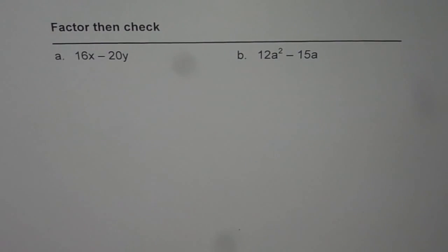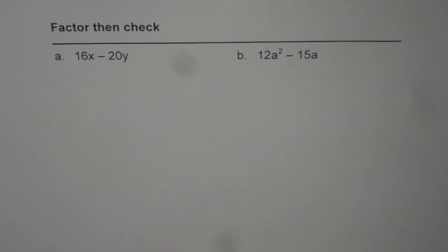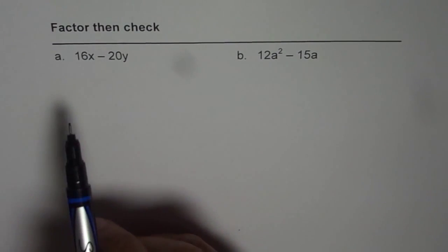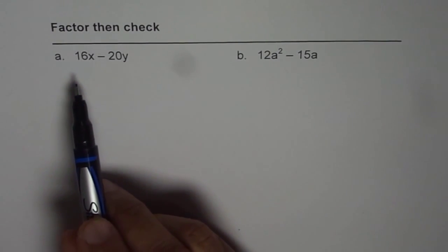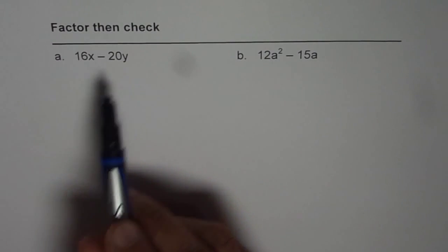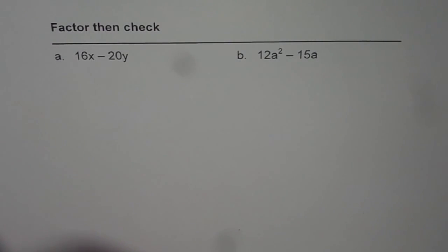Factor then check. We have two questions here to practice. Part A is 16x minus 20y, and Part B is 12a squared minus 15a. To factor, we need to find the greatest common factor between the two terms.